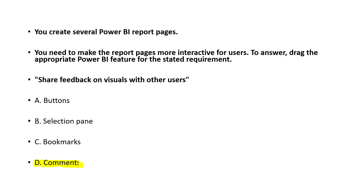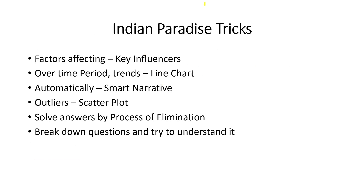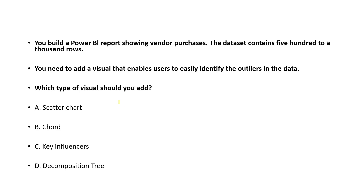Next question: you build a Power BI report showing vendor purchases. The dataset contains 502,000 rows. You need to add a visual that enables users to identify outliers in the data. As I mentioned with the keyword trick — when 'outlier' appears, Scatter Plot or Scatter Chart is the answer. Use this trick to save time in the real exam.